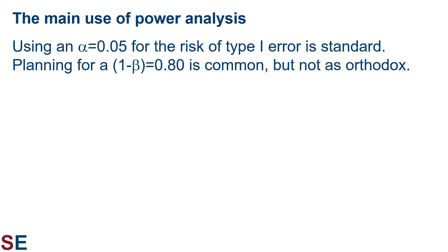Now that we've seen what determines power, when do we use it? Using an alpha value of 0.05 for the risk of type 1 error is standard — that's a low enough value that most people find it an acceptable risk. It's a bit more complicated for power. We want as large a power as we can manage; the higher the better, but that costs money. We also want some minimum power — if it's too low, why are we wasting our time doing the study? Planning for a power of 80% is common, but it's not as orthodox and widely accepted as the 5% alpha value threshold.